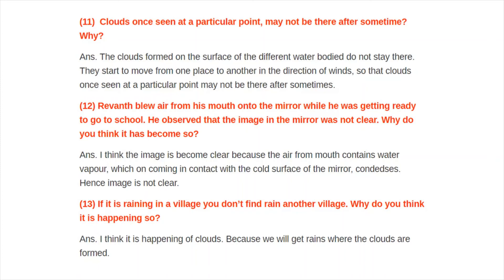Raven blew air from his mouth onto the mirror while getting ready to go to school. He observed that the image in the mirror was not clear — why? The air from the mouth contains water vapour, which on coming in contact with the cold surface of the mirror, condenses. Hence the image is not clear. We get rain where clouds are formed — wherever the clouds travel, there the rain falls.